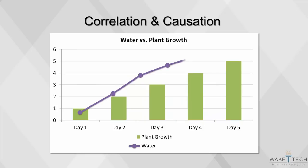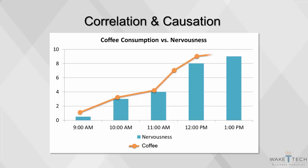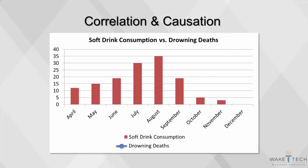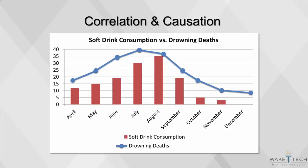Variables may be correlated if they have a causal relationship — for example, water causes plants to grow. Correlation can also occur when one variable is both the cause and the effect — for example, coffee consumption can cause nervousness, but nervous people may also drink more coffee. Correlation can also be high because both variables move together due to a missing third variable, such as deaths due to drowning and soft drink consumption during summer, both related to heat and humidity. Omitting such variables can be dangerous.